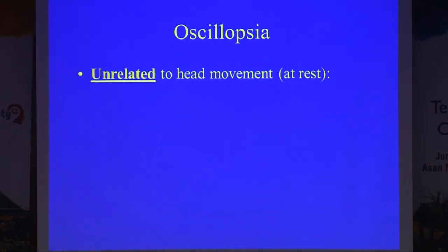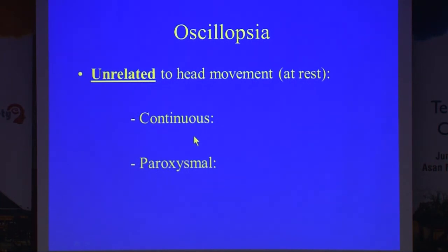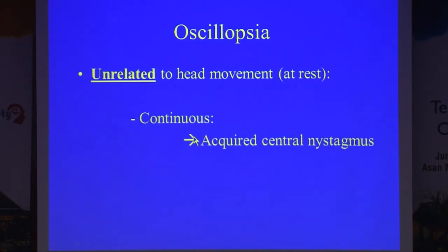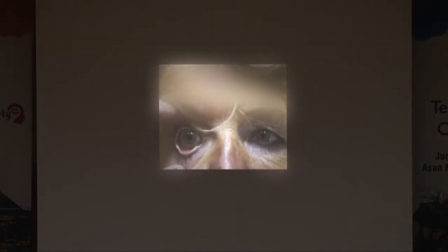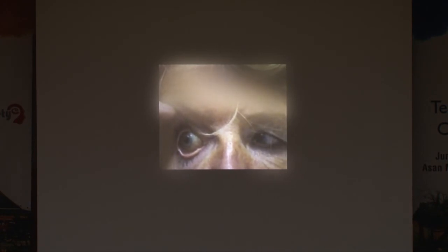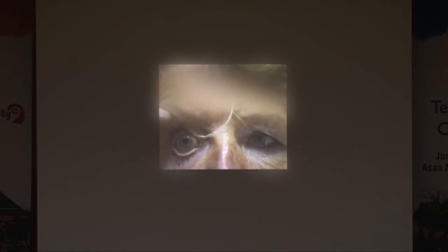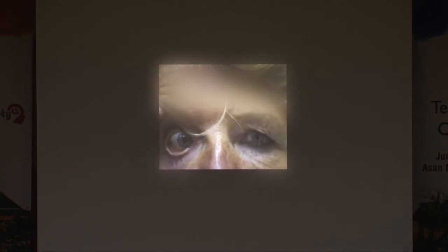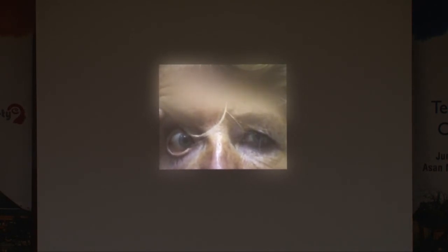If the oscillopsia is not related to movement, it can be continuous or paroxysmal. If it is continuous, it's some kind of nystagmus — like the downbeat nystagmus seen before. Remember that downbeat nystagmus is more prominent in lateral gaze. The registrars always say 'come and see this patient with right-beat nystagmus,' but actually it's downbeat nystagmus exacerbated by lateral gaze.